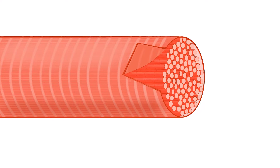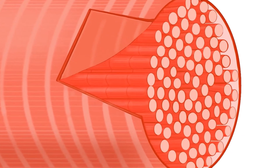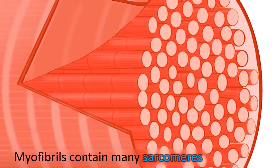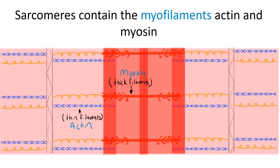Cardiac and skeletal muscle contain many rod-like structures called myofibrils. Myofibrils contain many segments called sarcomeres. Sarcomeres contain myosin and actin, and myosin and actin are myofilaments. So myofibrils contain the myofilaments actin and myosin.